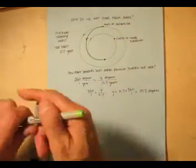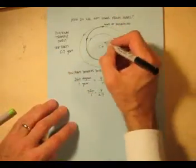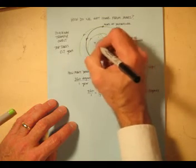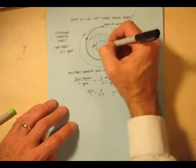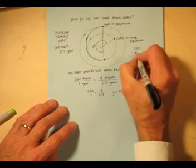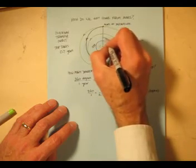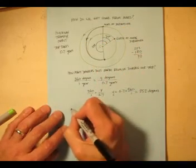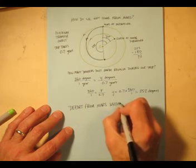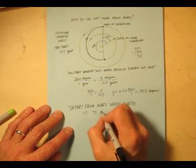So let's see, let's put the Sun in there so we have a vertex for our angles. And let's see, we said that from here all the way around here, that's 252 degrees. But from here to here, that's 180, so let's see, 252 minus 180 is 72, right? Okay, so this is going to be 72 degrees, and we need to depart from Mars...